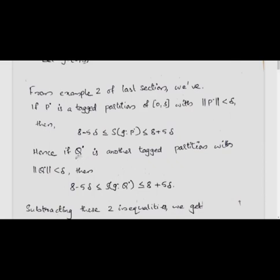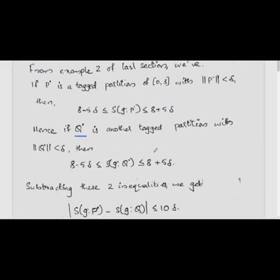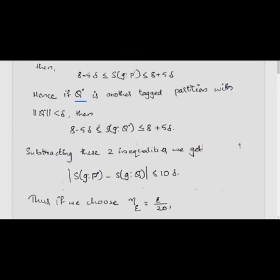So if Q̊ is any other tagged partition with norm ||Q̊|| < δ, then similarly 8 − 5δ ≤ S(g, Q̊) ≤ 8 + 5δ. Subtracting these two inequalities, we can say that |S(g, P̊) − S(g, Q̊)| will be less than or equal to 10δ.